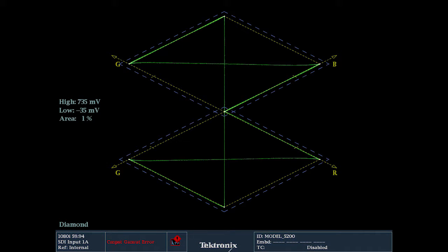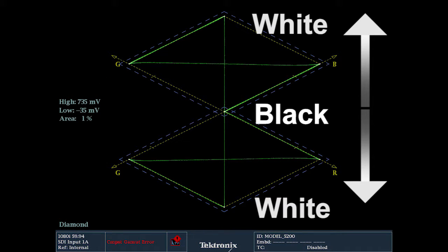The Luma component occurs in the vertical axis, from black in the center to white at the outer apex of the two diamonds. Chroma is shown in the horizontal axis.